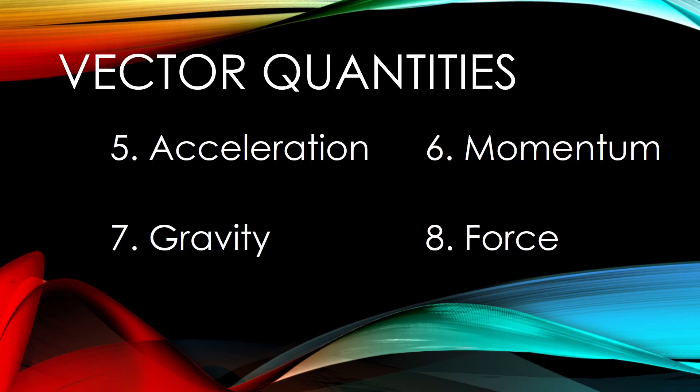Gravity is most accurately described by the general theory of relativity by Albert Einstein in 1915, which described gravity not as a force but as a consequence of the curvature of spacetime caused by the uneven distribution of mass. Gravity is a force by which a planet or other body draws objects toward its center, and it keeps all the planets in orbit around the sun.